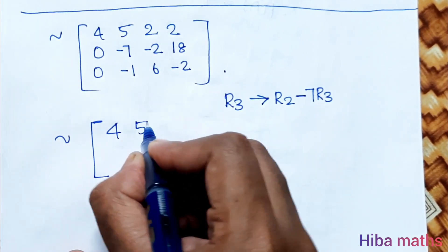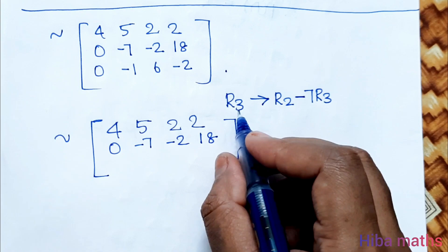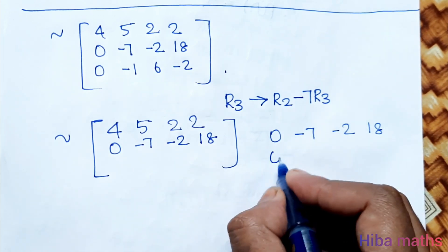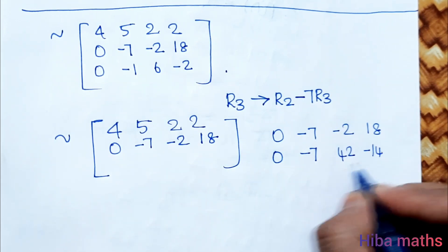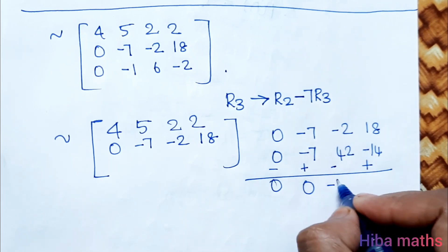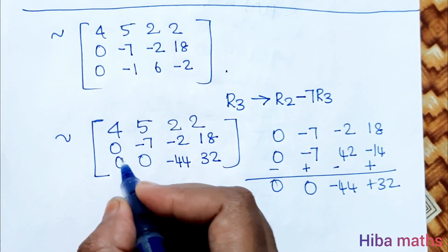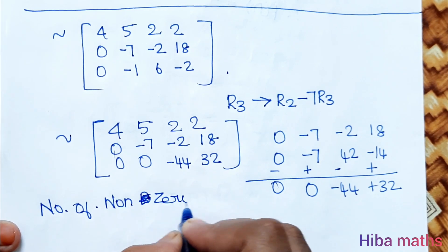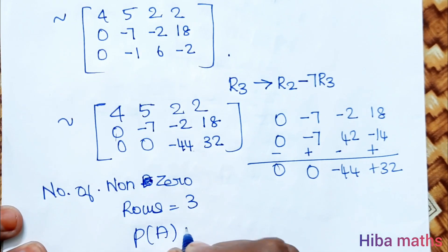First two rows are: [4, 5, 2, 2] and [0, 7, 2, 0]. After R3 operation: elements are [0, 0, -44, 32]. Now in row echelon form, we count non-zero rows: row 1 has numbers, row 2 has numbers, row 3 has numbers. So 3 non-zero rows. Therefore, the rank of matrix A is 3.